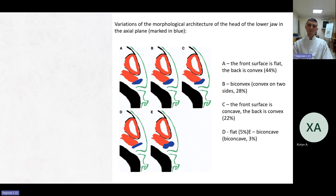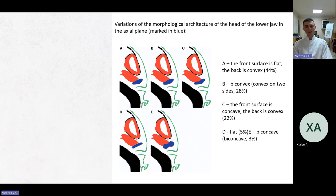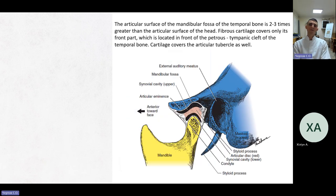Variations in the morphological architecture of the head of the lower jaw in the axial plane: the most frequent is picture A — front surface flat, back convex — at 44%; picture B — convex on two sides — 28%; picture C — front concave, back convex — 22%; picture D — flat — 5%; picture E — concave — 3%. The articular surface of the mandibular fossa of the temporal bone is 2-3 times greater than that of the head. Fibrous cartilage covers only the frontal part, located in front of the petrotympanic cleft.